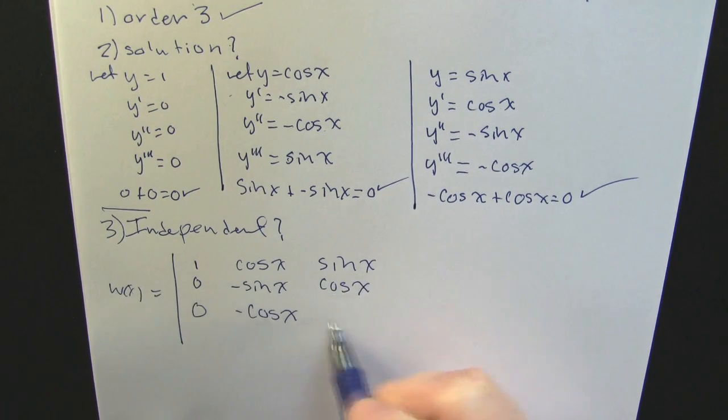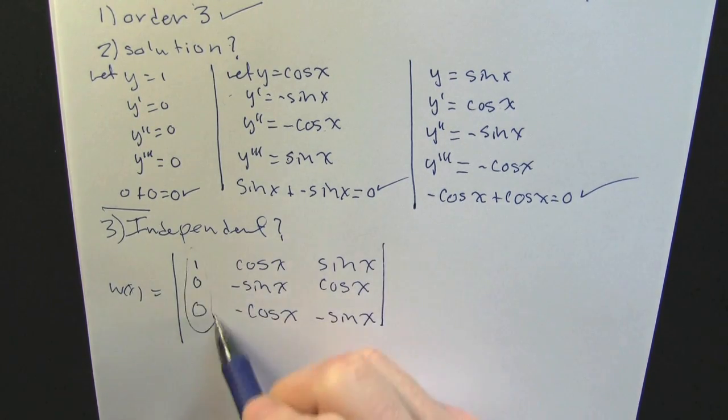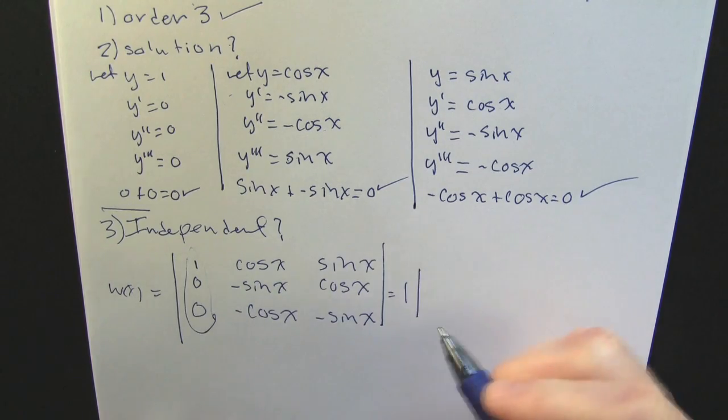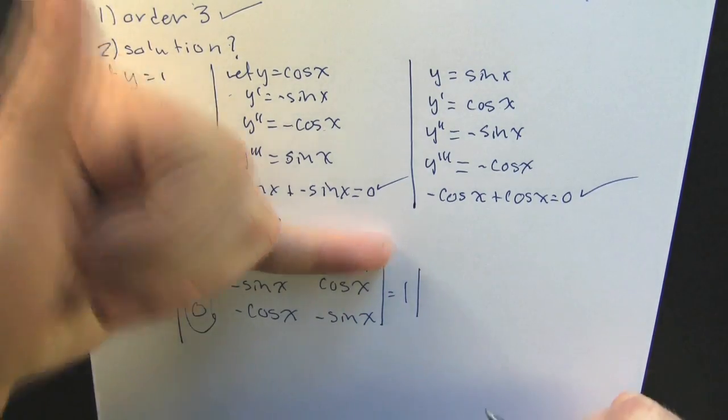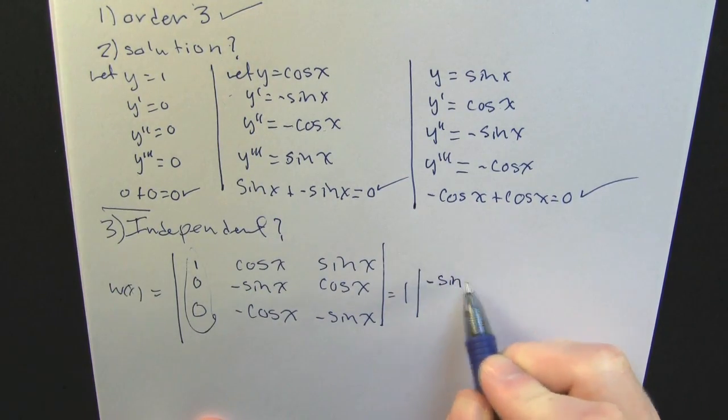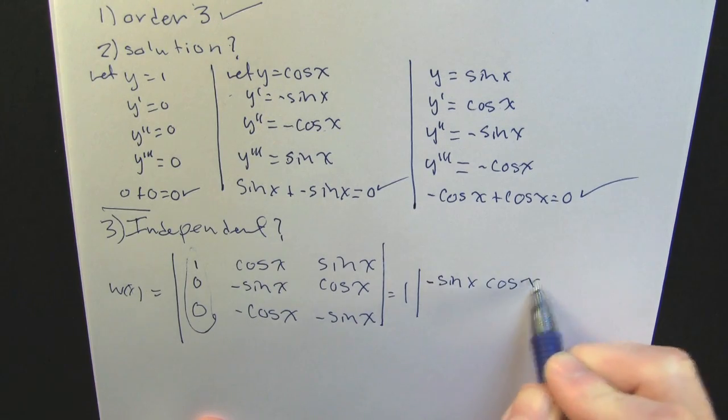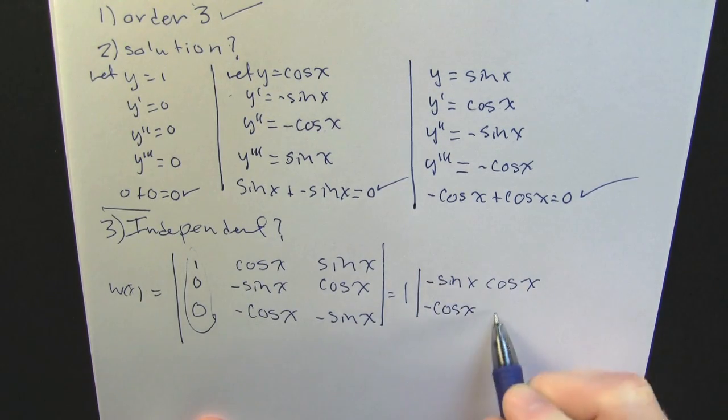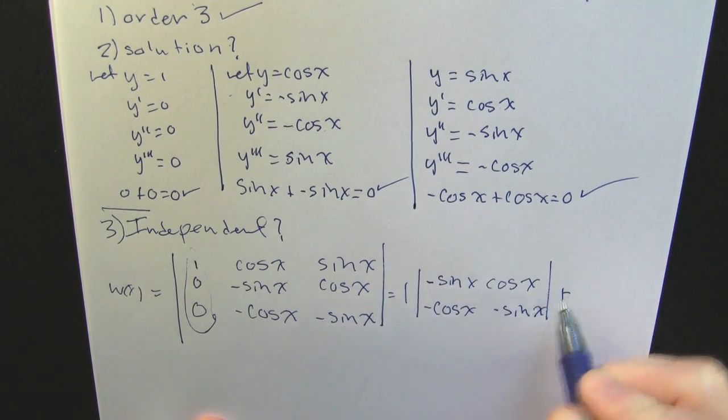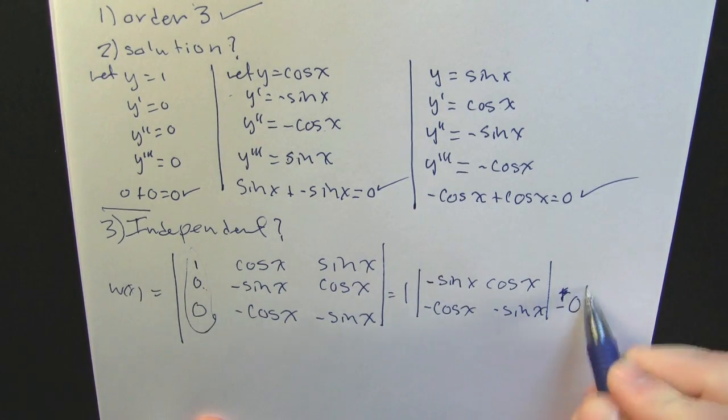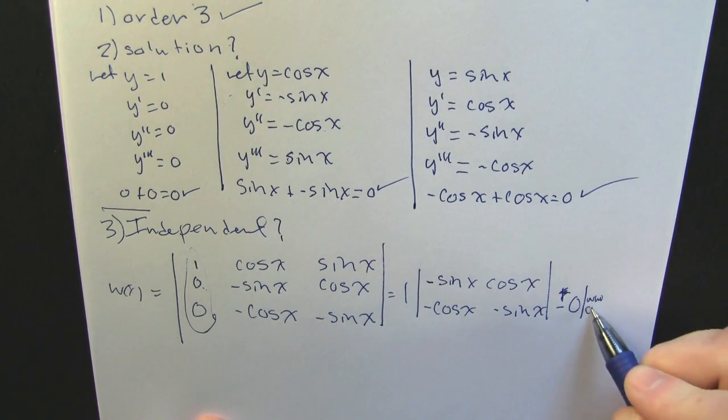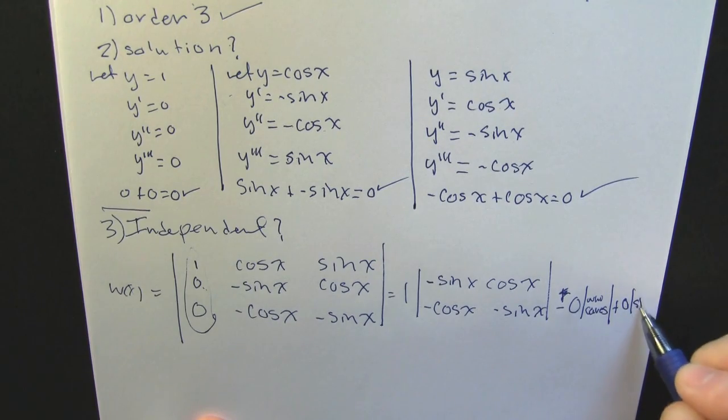He's going to take the determinant of the thing, and he hopes it's not equal to zero, because if it's not equal to zero, this set is going to be a fundamental solution set. Now he's expanding across what appears to be that first column. Why did he do that? Because those zeros were advantageous in computing the determinant because it wipes out all those minors.